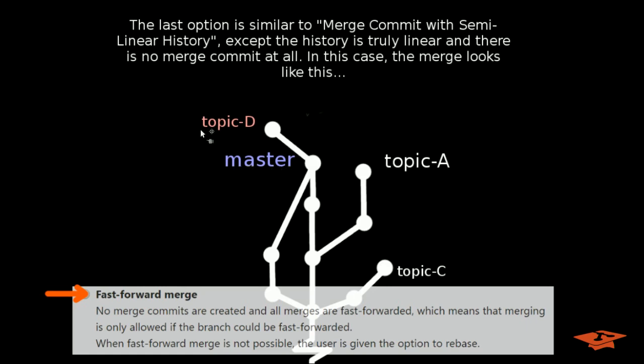For the example, destination branch of master and source branch topic D, if we had a fast forward merge, the tree would change like this. So the tree doesn't change, master just fast forwards to the location of topic D.